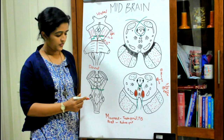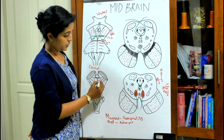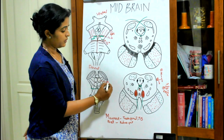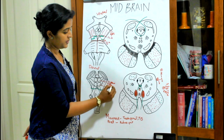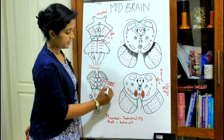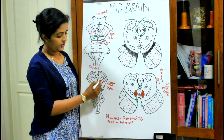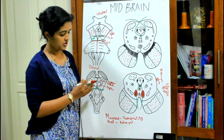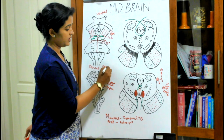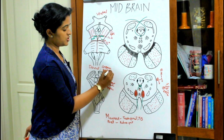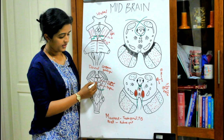On the dorsal aspect of the midbrain, you can see four rounded structures — two paired above and two paired below. The two paired above are called the superior colliculus and the two paired below are called the inferior colliculus. Together they form a four-rounded-structure complex called the corpora quadrigemina.